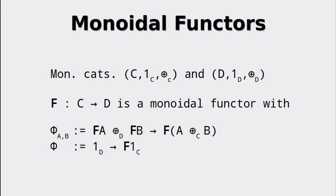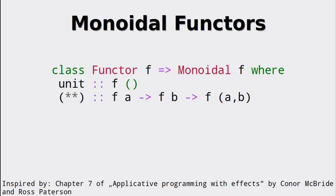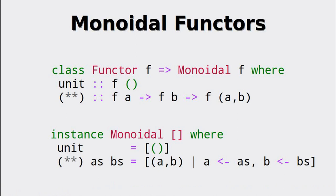Of course, this transformation also needs to transform the identity element. So let's implement this notion of a monoidal functor as its own type class. We need a unit function as well as the notion of lifting the application of the tensor product into a new context. In our case, the new context is the construction of a tuple, which is what our functor is mapping to. So for lists, an instance would look like this, where the unit is the empty tuple — which is the identity element for constructing tuples — in the context of a list, so it's just a list with the empty tuple.